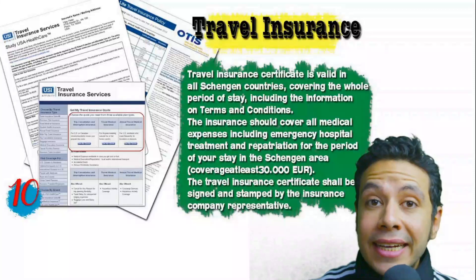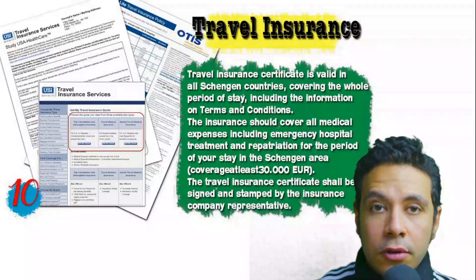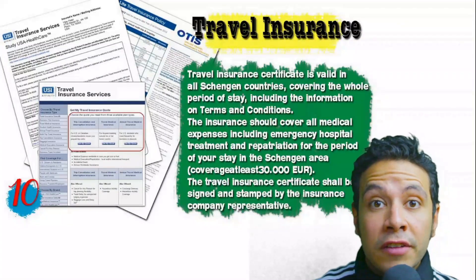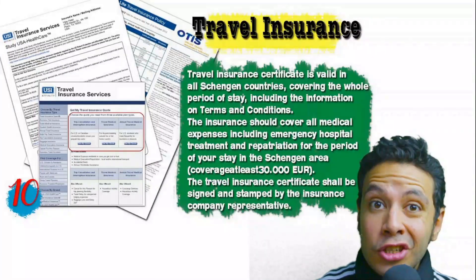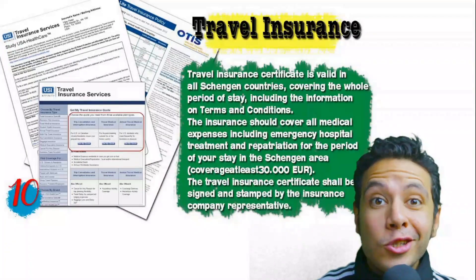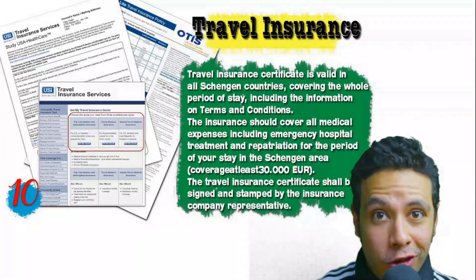Many countries, especially Schengen area countries, require you to provide travel insurance. You must apply through officially accepted companies. For Schengen area countries, the insurance coverage must be at least 30,000 euros. In general, you can apply for this insurance online. I know some of you are not familiar with how to make a flight booking, hotel booking, or travel health insurance, so in this section I will be teaching you how to do all these things step by step.